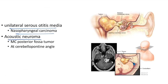Acoustic neuroma, also known as vestibular schwannoma, is the most common posterior fossa tumor. It usually occurs at the cerebellopontine angle, arising from the vestibulocochlear nerve.